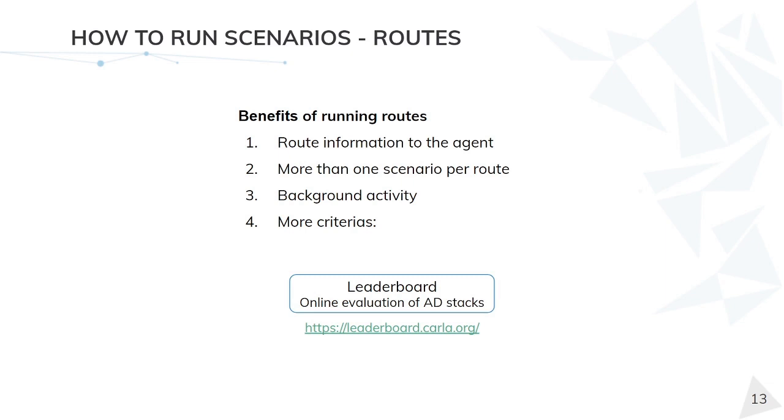Lastly, routes can also add new criteria which aren't related to any scenario, such as lane invasion, running a red light or running a stop sign. All of this has been put together and with the addition of some metrics to the criteria, we can now have an overall score for the agent. This has been put together at the leaderboard, which is an online web service to evaluate AD stacks and I'd highly recommend to take a look at it.